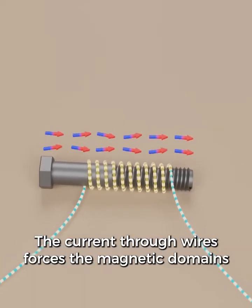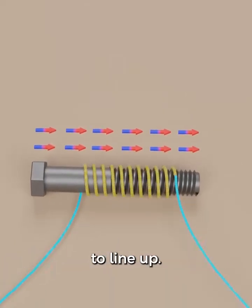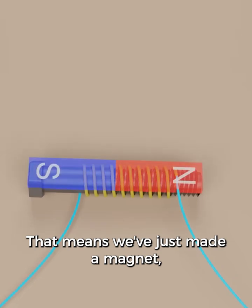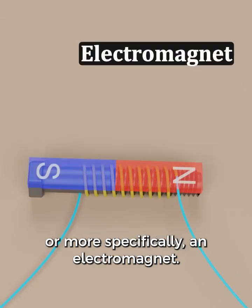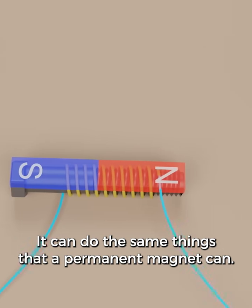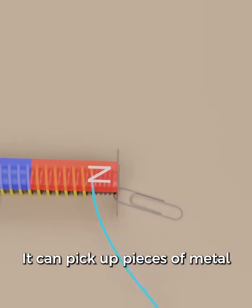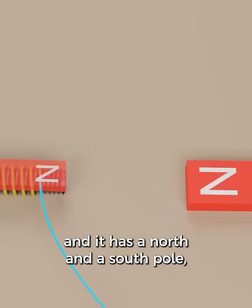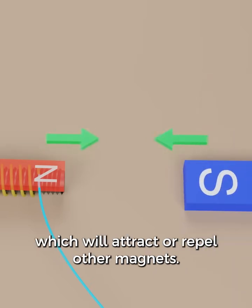The current through the wires forces the magnetic domains to line up. That means we've just made a magnet, or more specifically, an electromagnet. It can do the same things that a permanent magnet can. It can pick up pieces of metal, and it has a north and a south pole which will attract or repel other magnets.